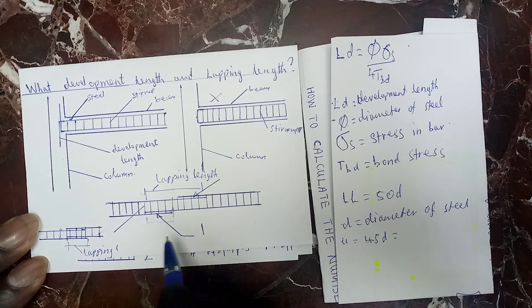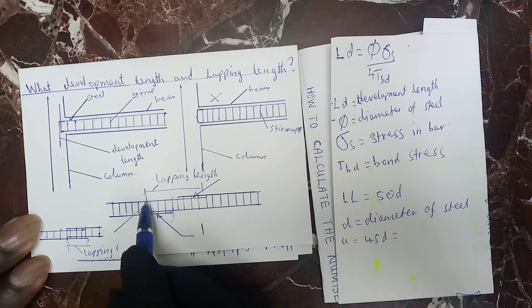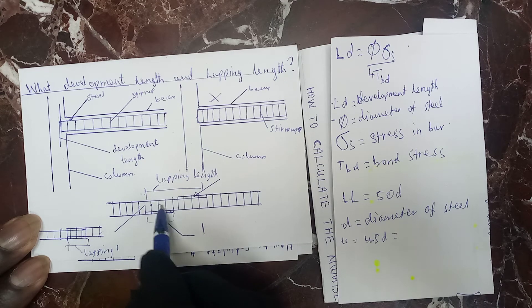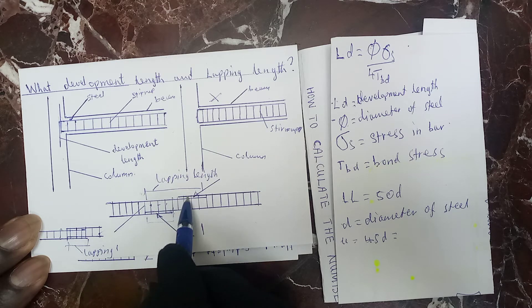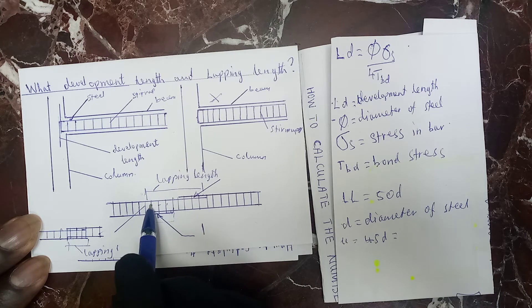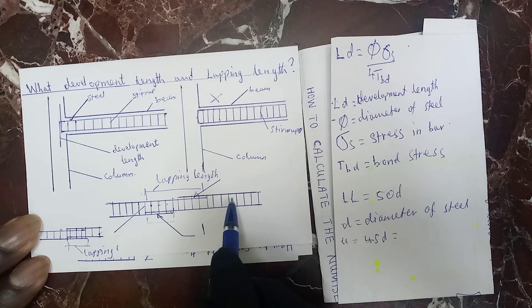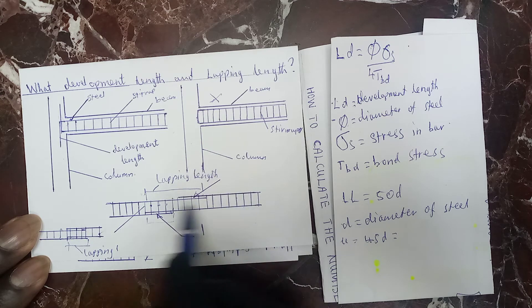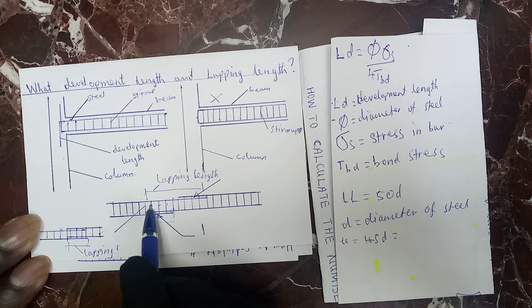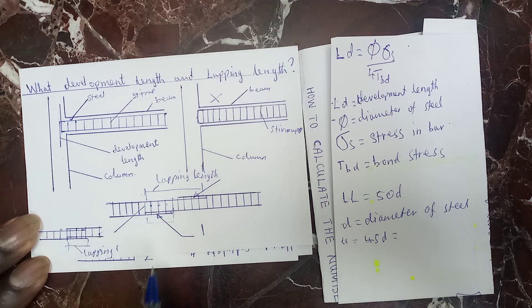When you provide lapping, these are stirrups and they have to be more closely spaced in the lapping zone. So if you are spacing the normal stirrups at 15 cm, here in the lapping zone you have to provide them at 10 cm spacing.